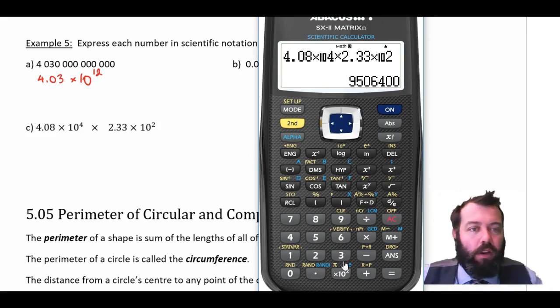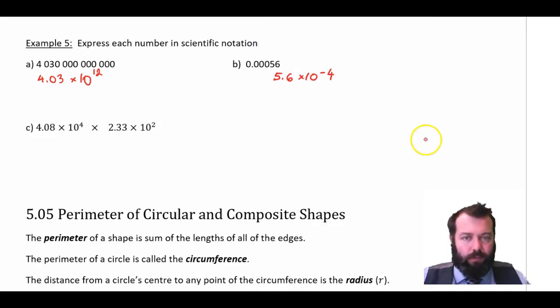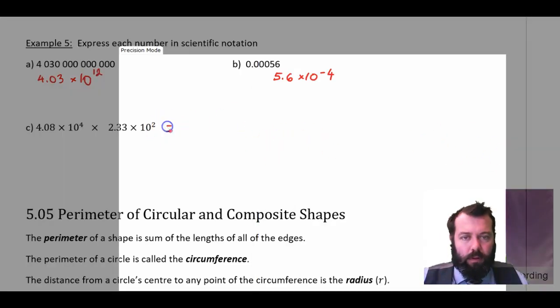So we're going to write that down as 9.5064. Now, times 10 to the power of what? 1, 2, 3, 4, 5, 6. I've got to move the decimal place 6 spots. So 9.5064 times 10 to the power of 6.